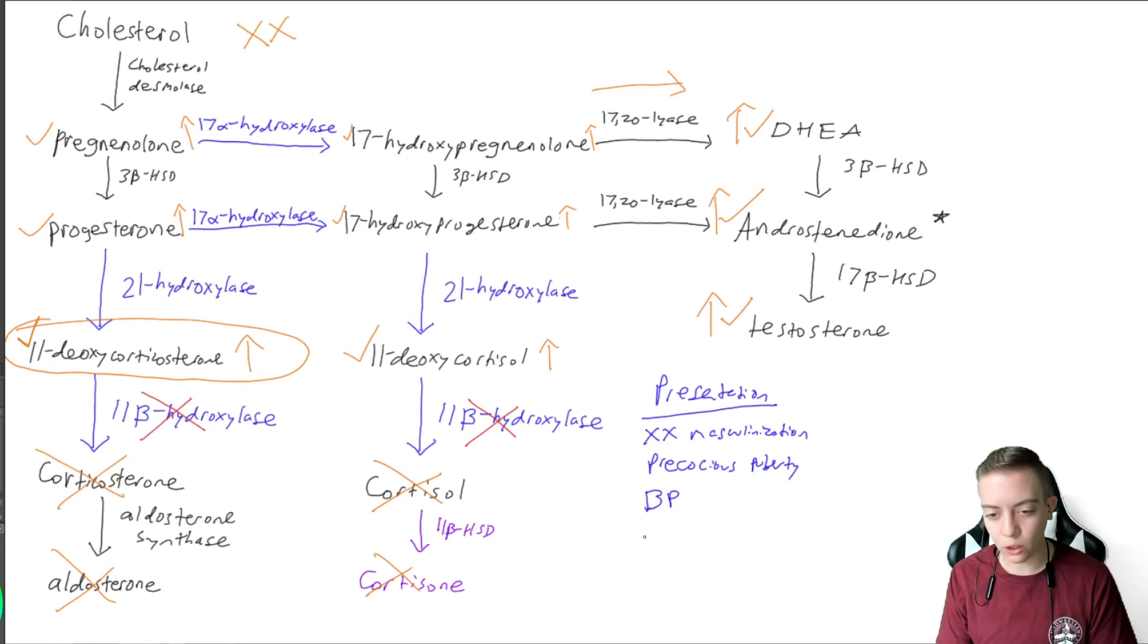And then I'm going to write out kind of our other factors that we were looking at last time. So we were looking at blood pressure, sodium, and potassium. And in this case, our blood pressure is going to be high.